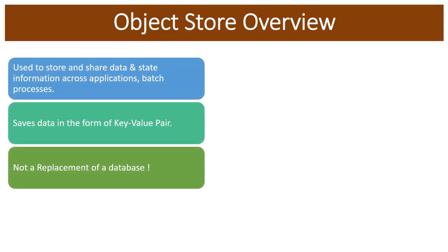Object Store is used to store and share data and state information across applications, batch processes, and components. The data that is saved and shared using Object Store is in the form of key-value pairs, so all the data in Object Store will be in key-value pair format where you save data against a particular key.